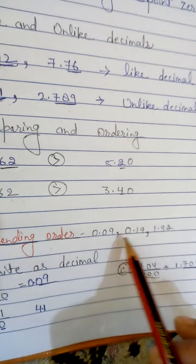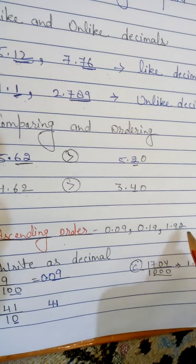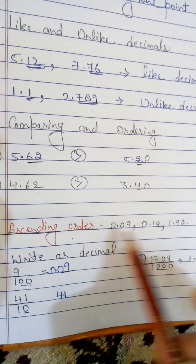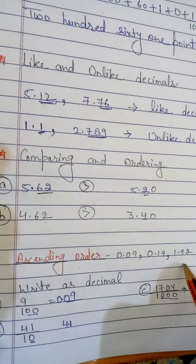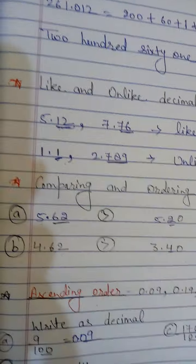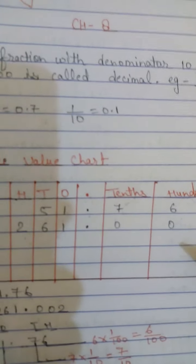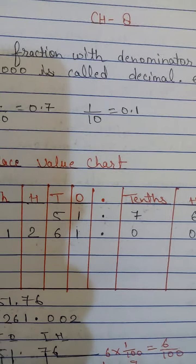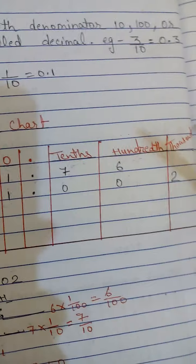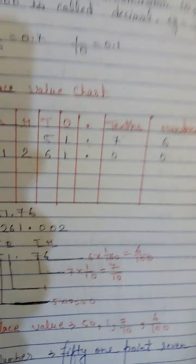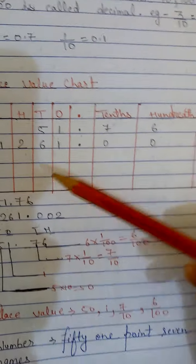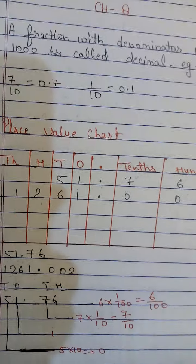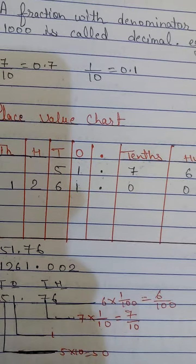For ascending order, arrange: 0.09, 0.19, 1.92. Have you understood like decimals, comparing, ordering, and the place value chart? This chart is very important for you. Please revise this work in your rough notebook so you will understand properly. Thank you.